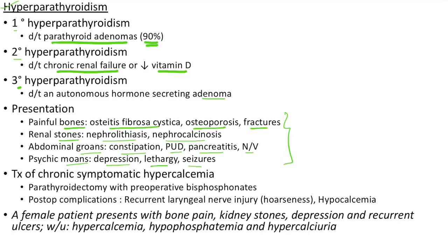For treatment of chronic symptomatic hypercalcemia in hyperparathyroidism, we have to do parathyroidectomy with preoperative bisphosphonates. Post-op complications of parathyroidectomy include recurrent laryngeal nerve injury leading to hoarseness and hypocalcemia. Clinical case: A female patient presents with bone pain, kidney stones, depression and recurrent ulcers. Workup shows hypercalcemia, hypophosphatemia and hypercalciuria. This is a classic case of hyperparathyroidism showing all the features which we have discussed.